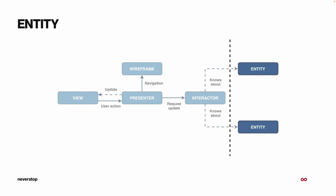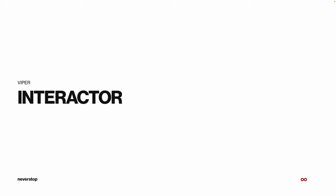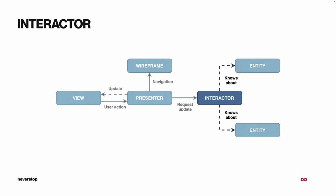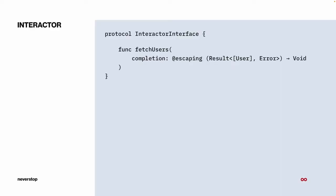A simple example of entities would be API services, which we group into several different entities. Who is in charge of consuming those entities? That's the next component — the Interactor. The Interactor sits right next to the entities and is the only component that knows about them. Its job is to leverage the data the entities provide and prepare it for use further along in the Viper module. An Interactor interface might have a function which fetches users from an API and returns a list of those users or an error.